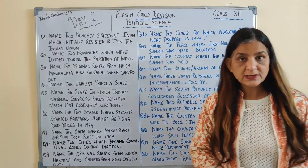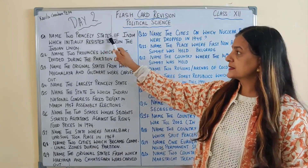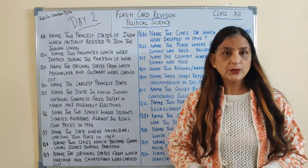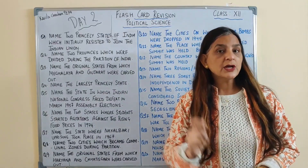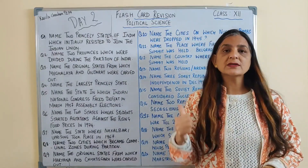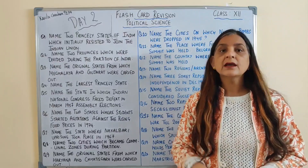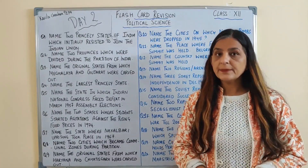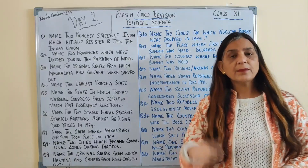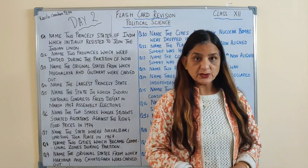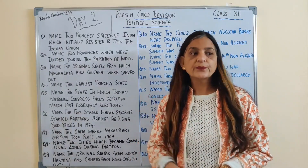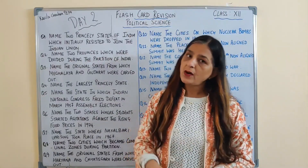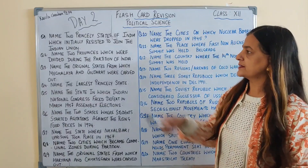First question: name 2 princely states of India which initially resisted to join the Indian Union. Jab India independent hua tha, to kaunsi 2 princely states thi initially jinhone India mein merge hone ke liye accept nahi kiya tha. Yahan pe 4 states ke names aapki book mein mentioned hain, aap koi do likh sakti ho. And the answer is Junagadh, Hyderabad, Kashmir, aur Manipur. Any two you can write.